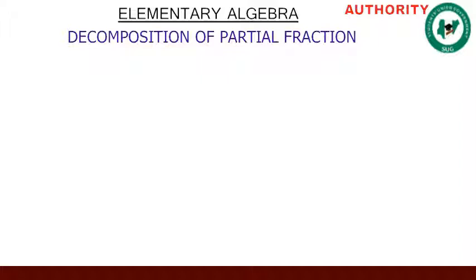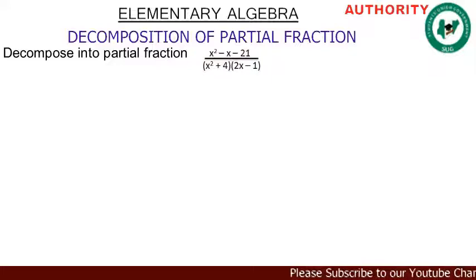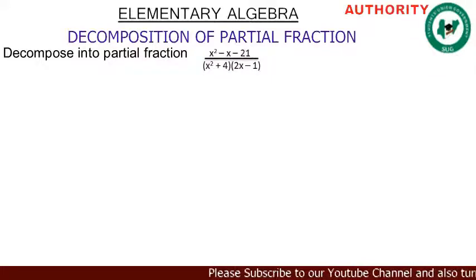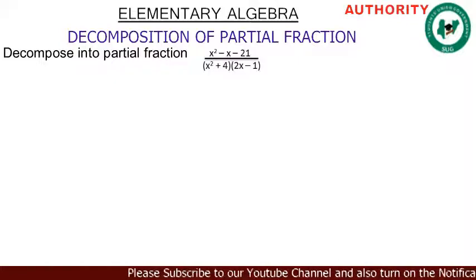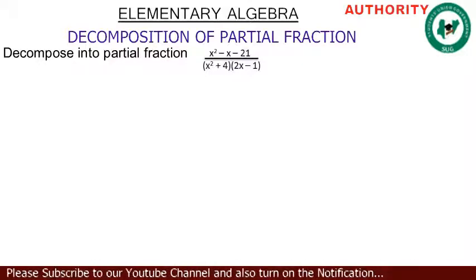Alright, welcome again. We are still treating the composition of partial fractions. Now let's take this question: decompose into partial fractions (x squared minus x minus 21) all over (x squared plus 4)(2x minus 1). Now, you know we have x squared plus 4 — you cannot break it any further.